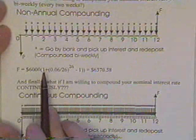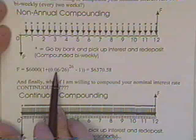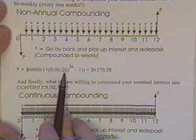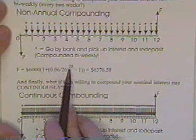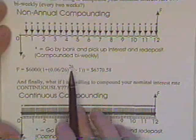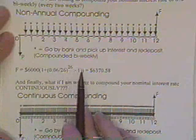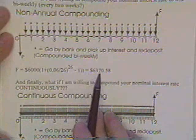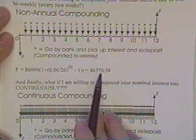Then the future value is $6000 times (1 + nominal rate), there are 26 payment periods, raised to the 26 power—52 weeks in a year approximately—minus one. You make $6370 instead of $6368.